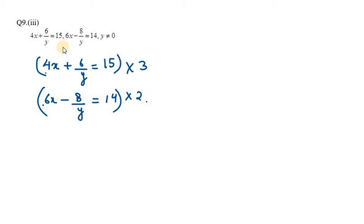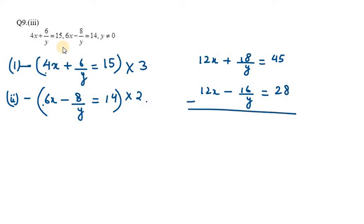Equation 1 times 3 becomes 12x plus 18 over y equals 45. Equation 2 times 2 becomes 12x minus 16 over y equals 28. We can subtract to eliminate 12x, which gives us 0.